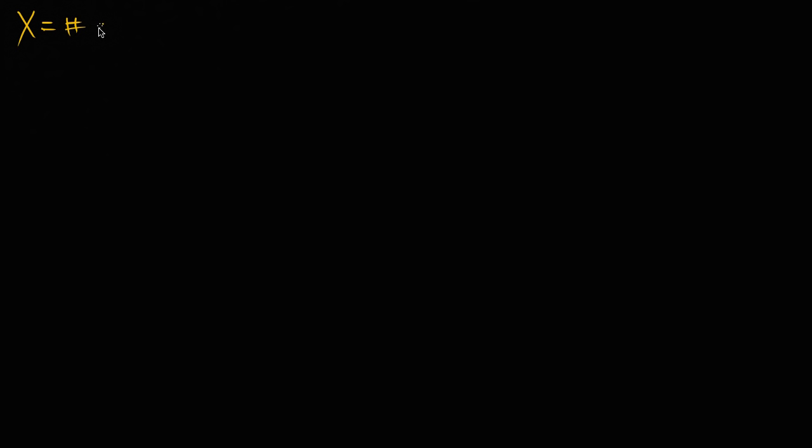Let's define a random variable X as being equal to the number of heads from flipping a fair coin — we're going to assume it's a fair coin — five times. And like all random variables, this is taking particular outcomes and converting them into numbers.